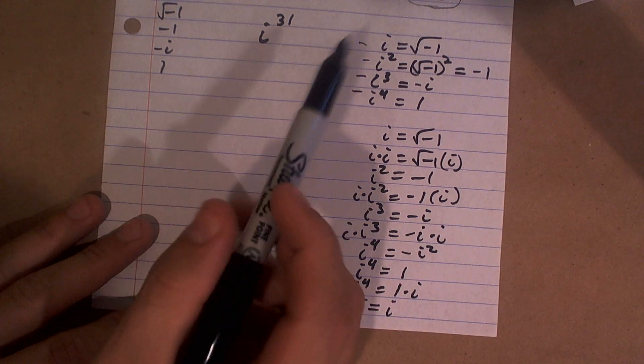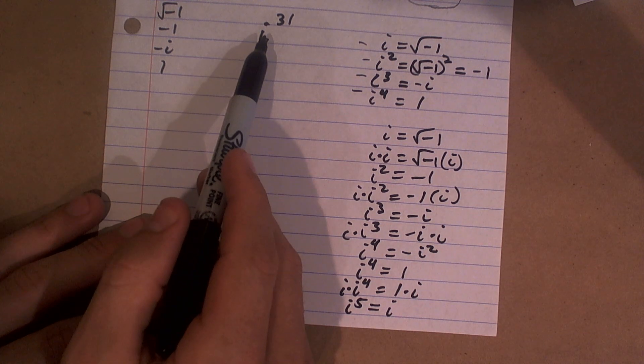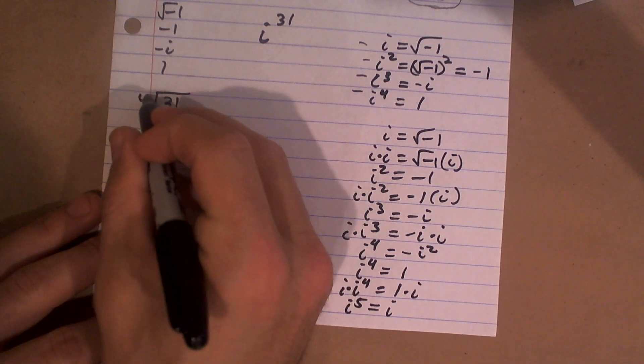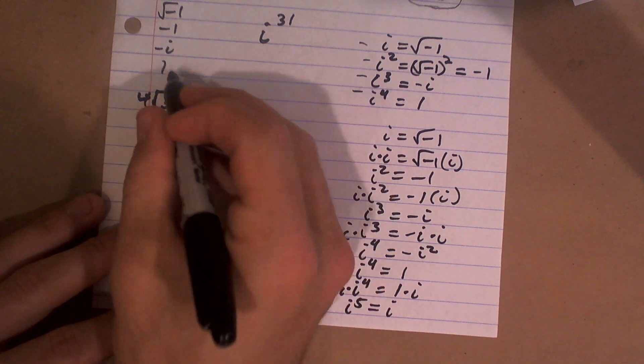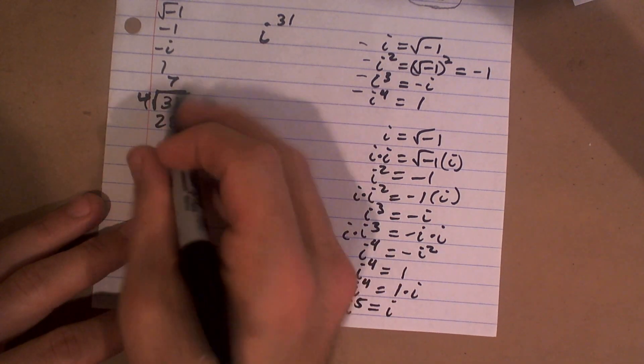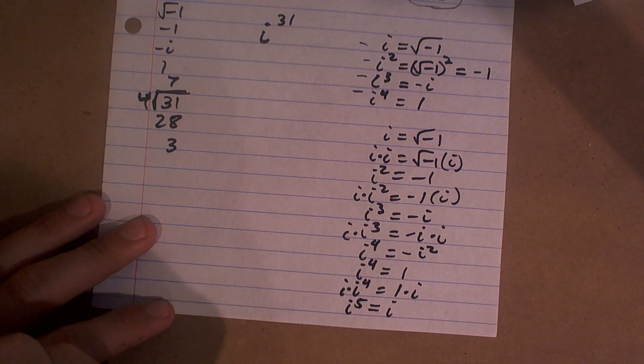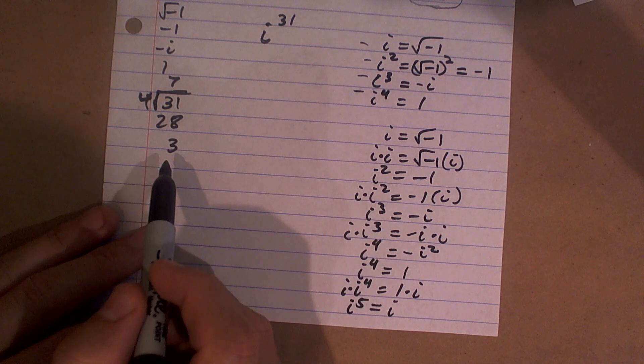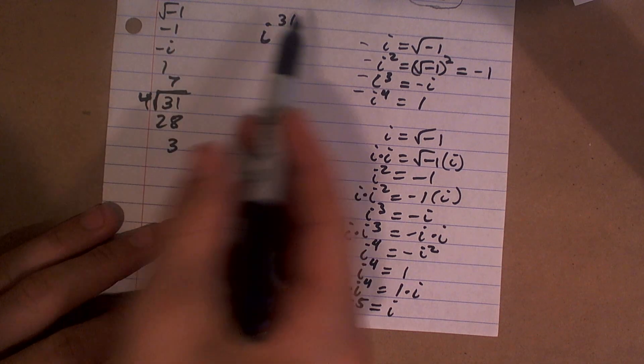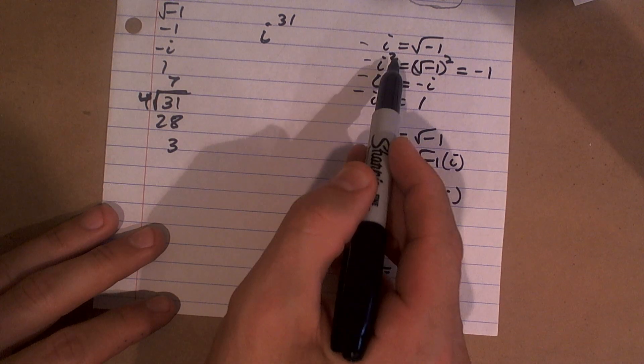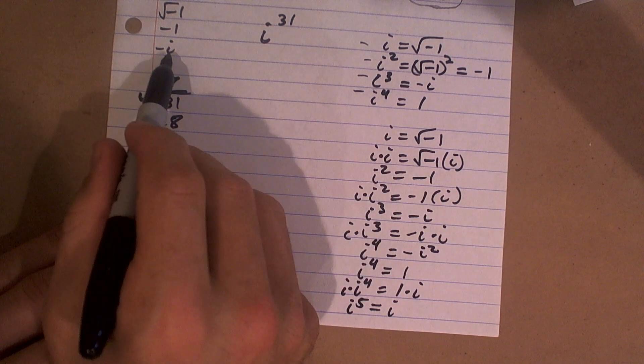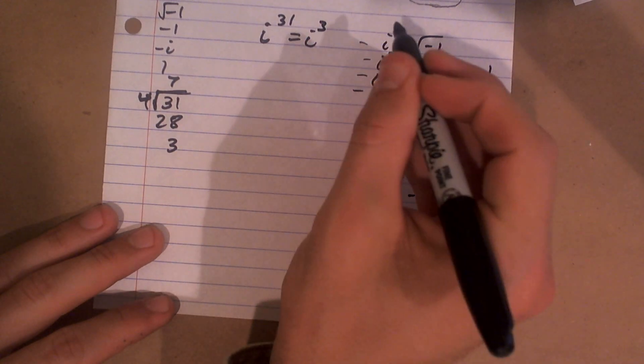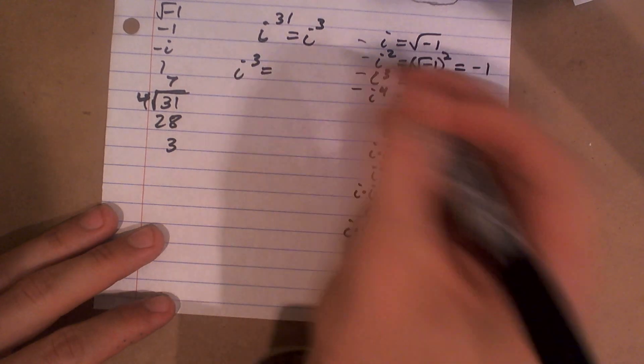So what we can do to kind of circumvent that, to kind of speed it up, is just say, alright, well, if I divide 31 divided by 4, what would be my remainder? So let's do that. Let's do 31 divides into 4 with the remainder of 3. So pretty much what you can think about is your remainder of 3 is going to be like your leading exponent left over. So really what this is, is you're going to have a remainder of 3, so i to the first, i to the second, i to the third is going to be your answer. So i to the third is equal to negative i. Therefore, i to the 31st is the same thing as i to the third, which is equal to negative i.